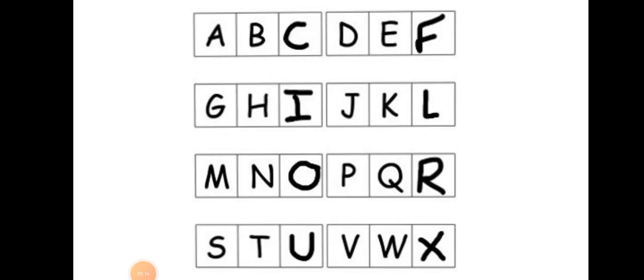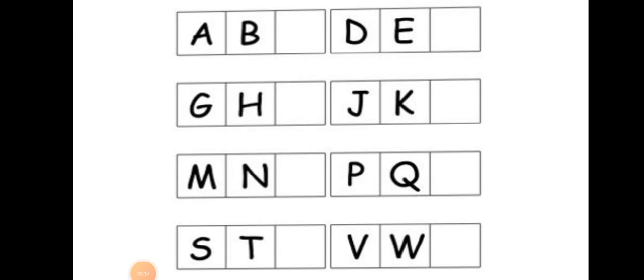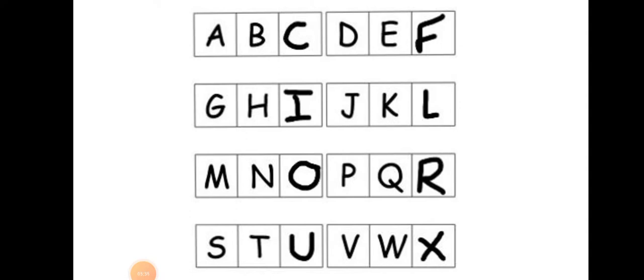Now here madam has shown you the alphabets that were missing in the previous slide. Madam has written them here so you can understand what comes after. When madam filled the blanks, madam wrote C, D, E, F, G, H, I.